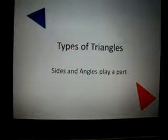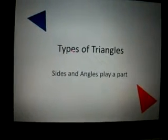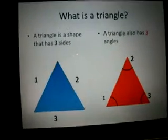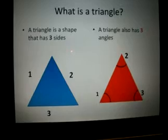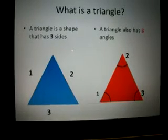Types of triangles. Sides and angles play a part. First, what is a triangle? A triangle is a shape that has three sides. It also has three angles.